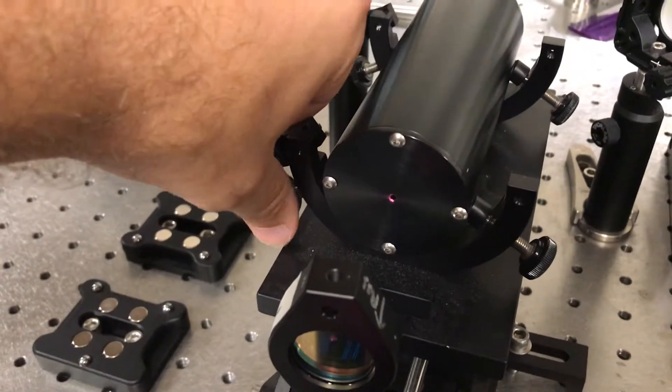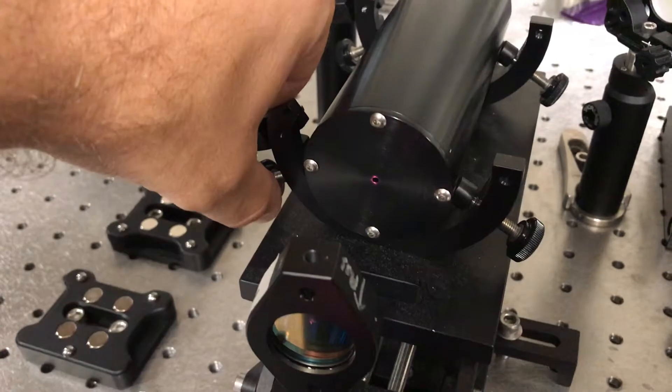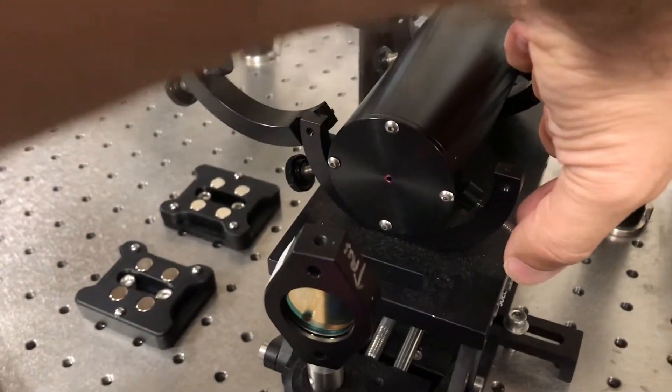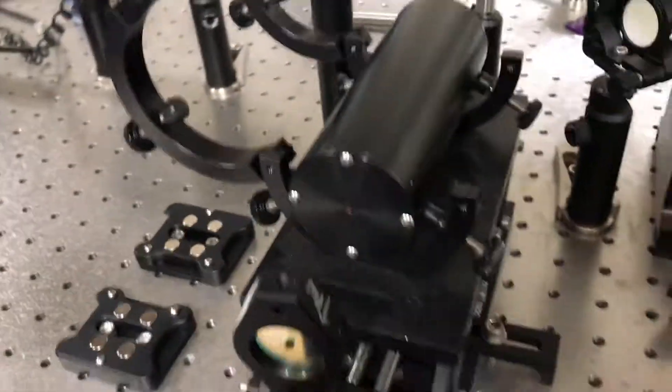Now, the aperture on this alignment tool is a little bit smaller than the actual aperture on the EOM, so it's like kind of a worst-case scenario. Okay, so that's pretty good.